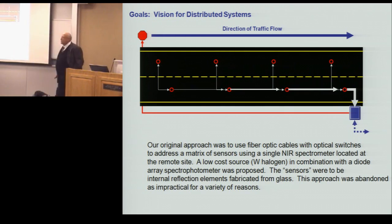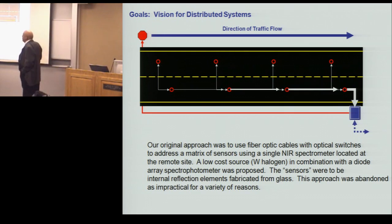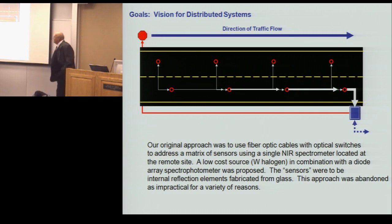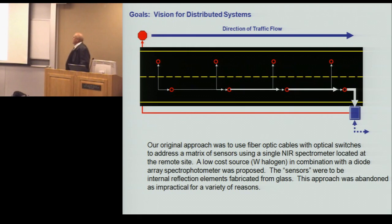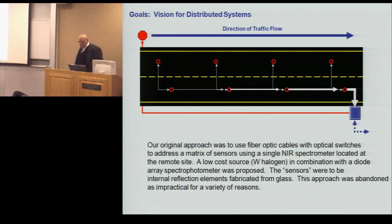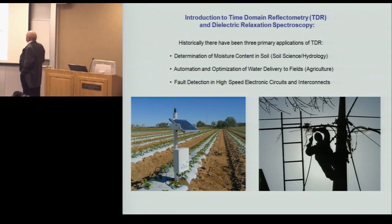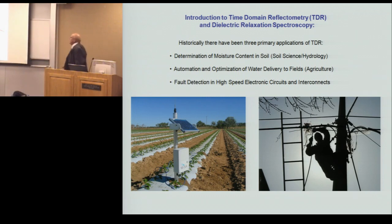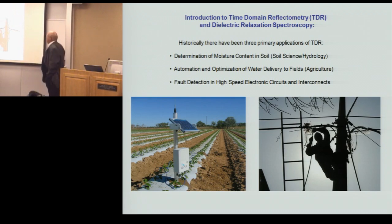We still have this general distributed approach in mind, but we're going to use different technology. The technology we are using is time-domain reflectometry, and in fact we're using a dielectric relaxation spectroscopy application of time-domain reflectometry. I'll try to make it as simple as possible. Historically, this is a pretty well-developed technology, used primarily initially in moisture content determinations in soil — primarily in agronomy applications, but also in soil science and hydrology.